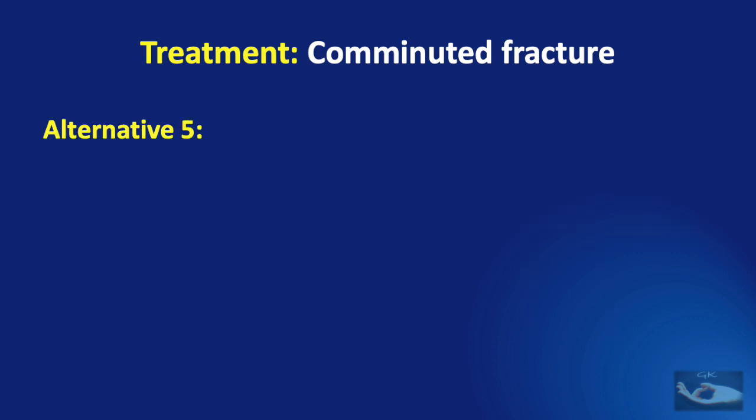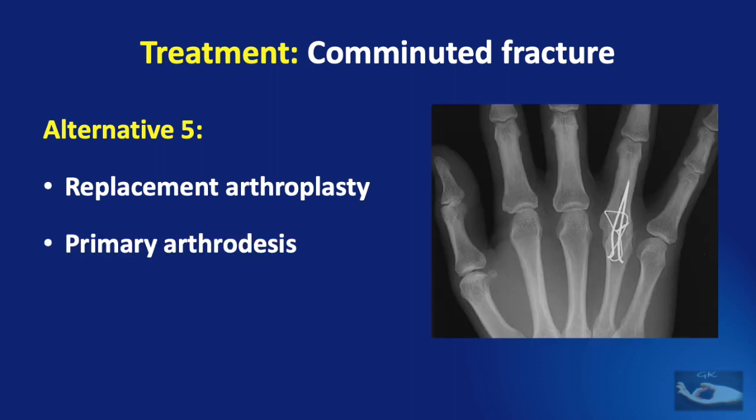If all these alternatives cannot be done or have failed, replacement arthroplasty remains an option, though it is not ideal given the significant soft tissue involvement. In the most extreme cases, a primary arthrodesis can also be performed.